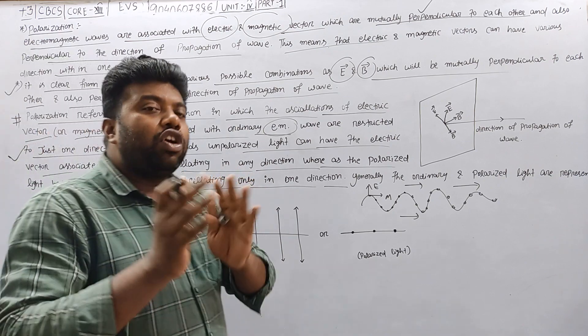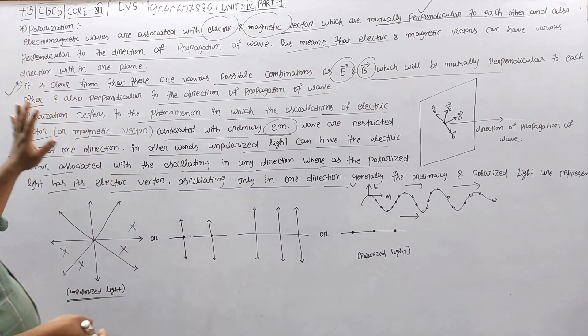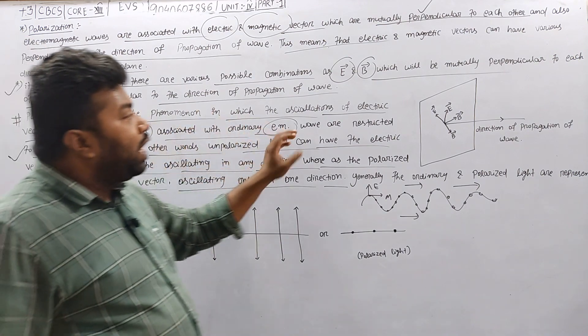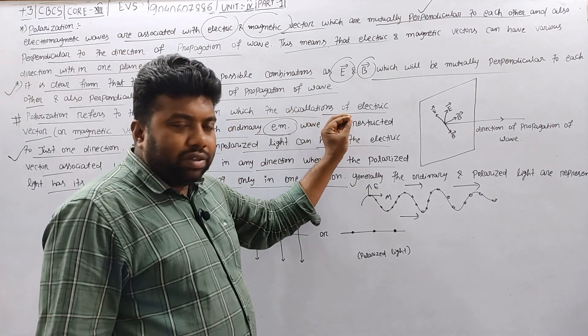When light oscillates in a particular direction, that is called polarization. Polarization refers to the phenomenon in which oscillation of the electric or magnetic vector is restricted in just one direction.